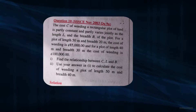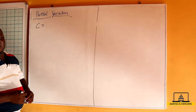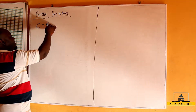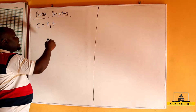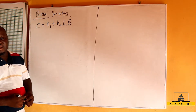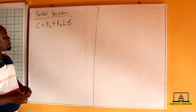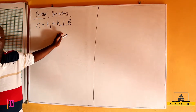In this question, the first thing is we are going to write our equation. The cost C of weeding a rectangular plot of land is partly a constant and partly varies jointly as the length and breadth of the plot. So we have C is equal to K1 plus K2·L·B.